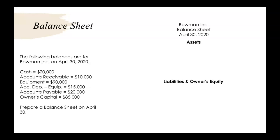If you take a look on the right side of your screen, it says Bowman Inc. — that's the company name — Balance Sheet, that's the financial statement you're preparing, and then April 30th, 2020. A balance sheet is a snapshot in time, so it's just the date that you prepare it, rather than what we see on the income statement and owner's equity with 'for the month ended' or 'for the year ended.'